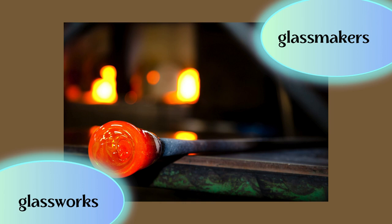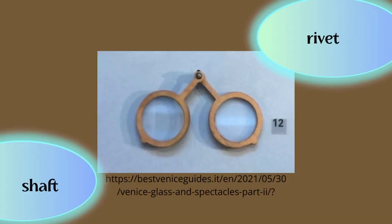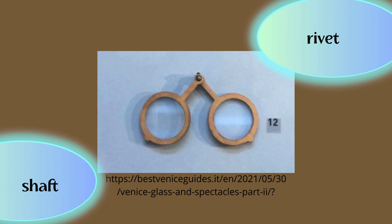That's why the German word for glasses is 'Brille,' because it is connected with the rock beryl, as mentioned earlier. The first glasses actually looked like this: it was two lenses, and each lens was put in a special wooden ring.